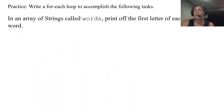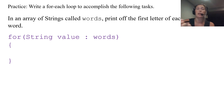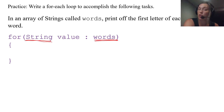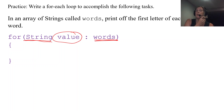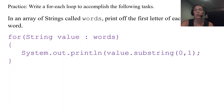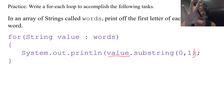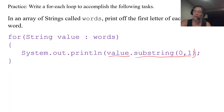Second example: given a string array called words, print the first letter of each word. Since it's an array of strings, the for-each header uses type String. Each time through, the local variable represents the current string. To print the first letter, we write 'System.out.println(value.substring(0, 1))' — that prints off the first letter of each word.